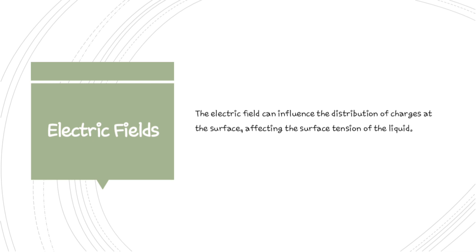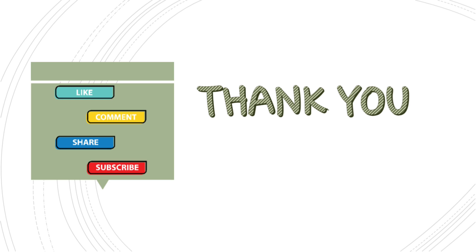The next factor is electric field. The electric field can influence the distribution of charges at the surface, affecting the surface tension of the liquid. For example, place a charged object near a water droplet. The electric field from the charged object can affect the orientation of water molecules at the surface, altering the surface tension. Therefore, electric field also affects the surface tension. I hope you have understood the various factors that affect surface tension. Thank you.